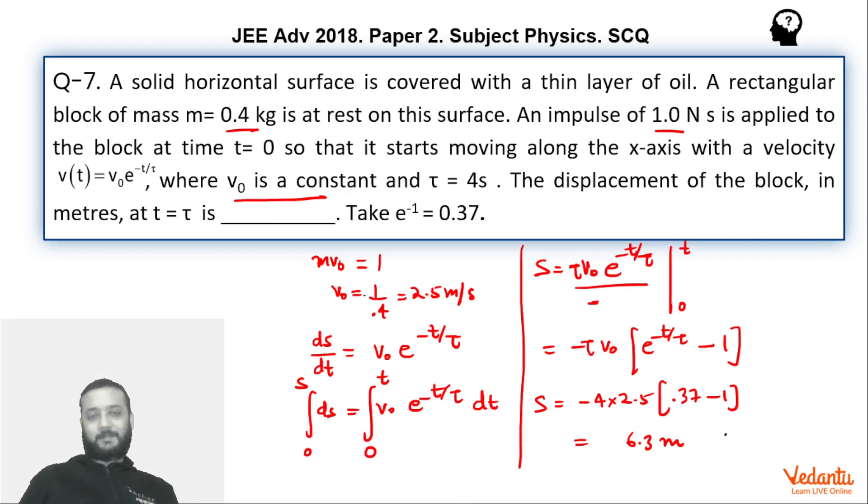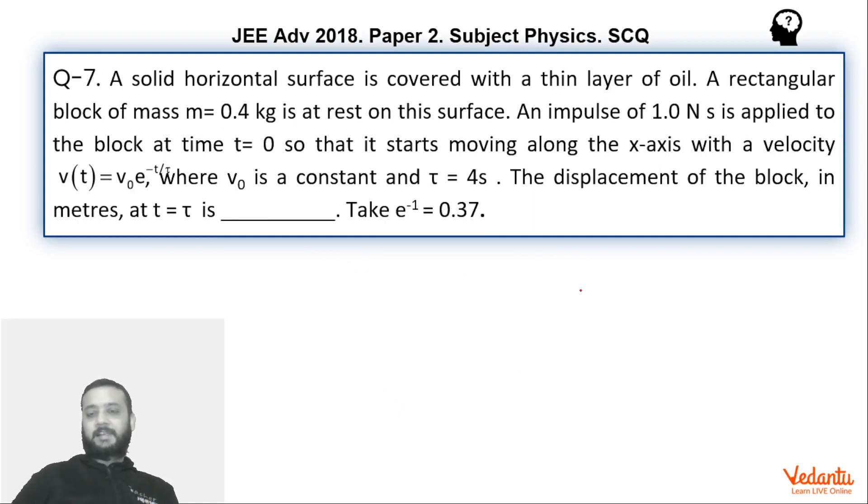So this is the regular approach to solve this question. Now let's see the capacitor method. We realize that in an RC circuit, if you try to recall that charge as a function of time is nothing but CV0 times 1 minus e to power minus t by tau. Tau is nothing but RC. And the current in this case is v0 upon R times e to power minus t by tau. Tau is RC.